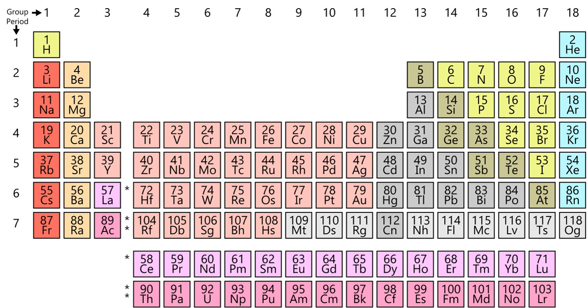All but a few of the most inert elements, such as noble gases and noble metals, are usually found on Earth in chemically combined form, as chemical compounds.